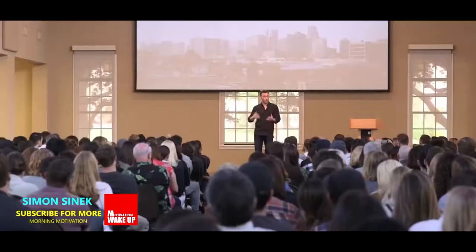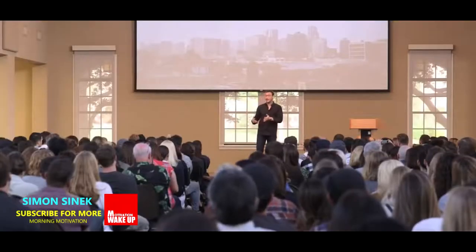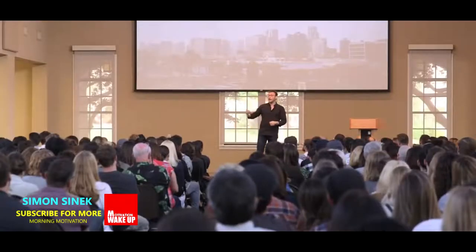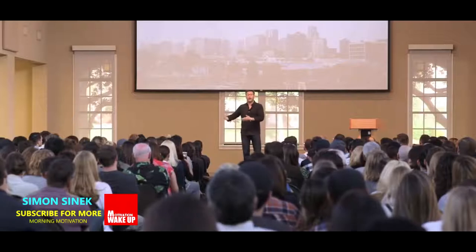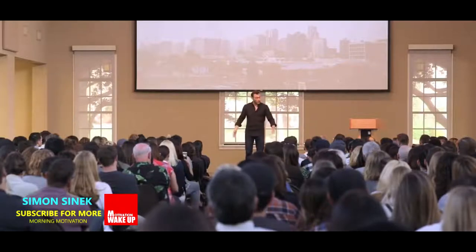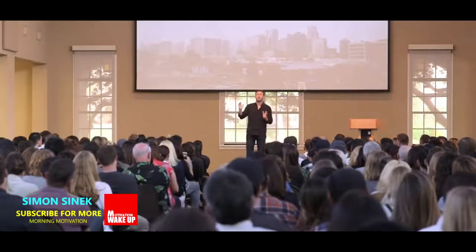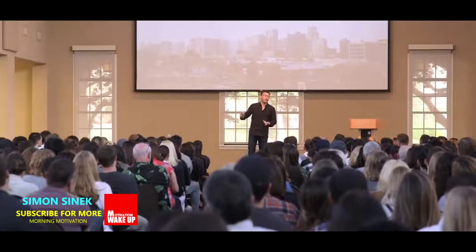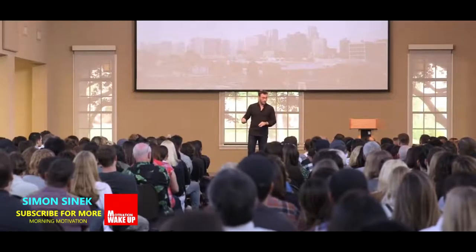A finite game is defined as known players, fixed rules, and an agreed-upon objective. Baseball: we all agree what the rules are, and at the end of nine innings whoever has more runs we declare the winner and the game is over. No one ever says, 'wait, if we can just play three more innings I know we can come back and win.' Doesn't happen. You have winners and you have losers.